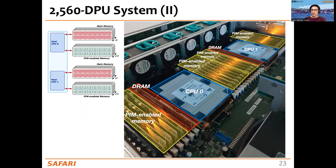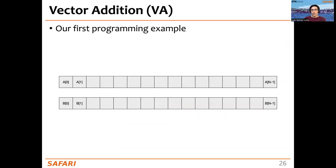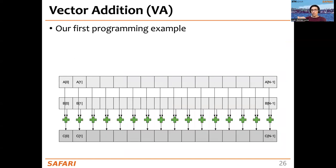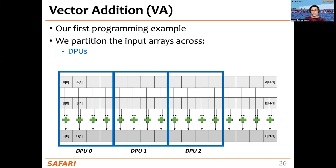To understand the system, it's important to also understand how it needs to be programmed. We'll talk more about that in later lectures, but for today I want to give our first programming example: a simple vector addition, where we have two input vectors A and B and one output vector C. The computation is the element-wise addition of A and B, storing the result in C. To compute this on the Upmem PIM system, we first partition the arrays across DPUs. With four DPUs, we assign a chunk of the arrays to DPU 0, DPU 1, DPU 2, and DPU 3.